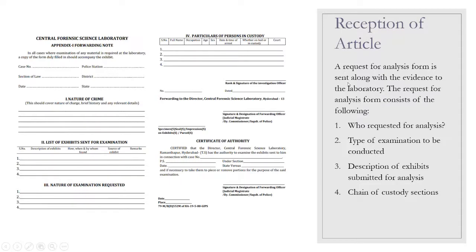Regarding reception of the article: a request for analysis form is sent along with the evidence to the laboratory. The request for analysis form consists of the following — who requested the analysis, the type of examination to be conducted, a description of the exhibit submitted for analysis, and chain of custody sections. These are the four important questions included at the time of reception of the article.